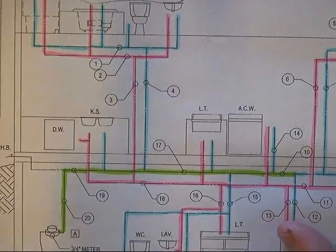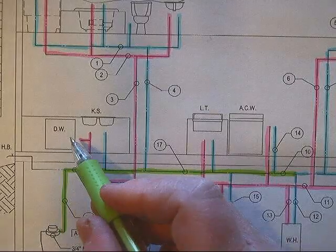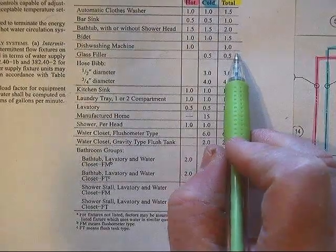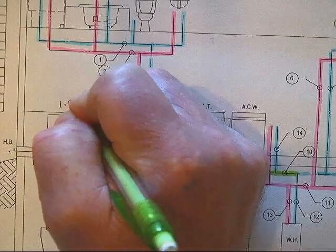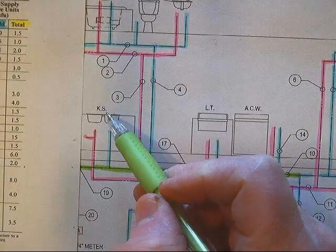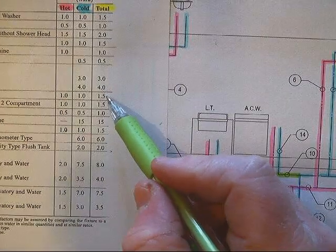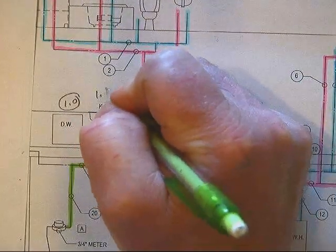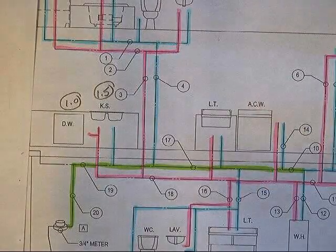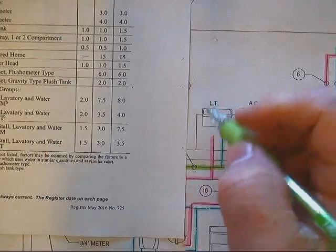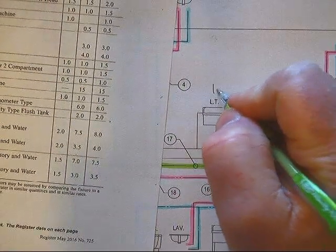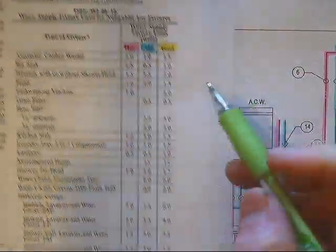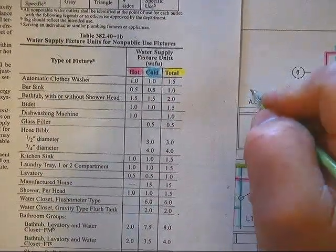Now I'll move down below and here I have a dishwasher and a kitchen sink, and the total load for the dishwasher is going to be one. And the total load for the kitchen sink will be 1.5. And then the laundry trays right next to it, that is going to be 1.5. And the automatic clothes washer will be a total load of 1.5.